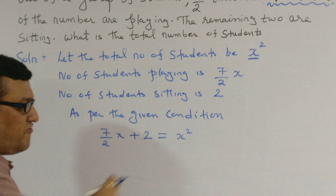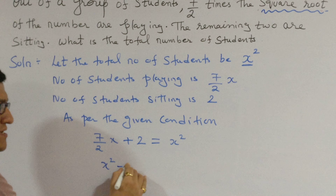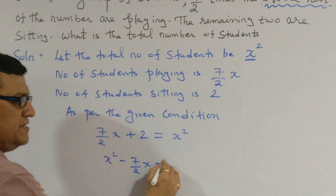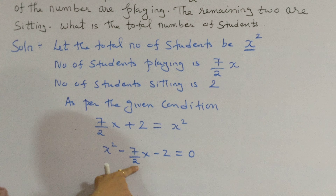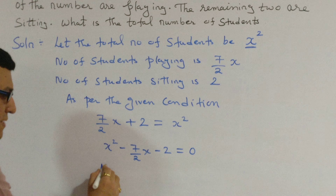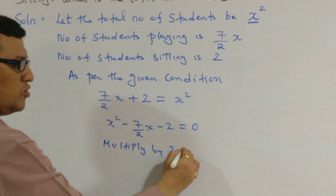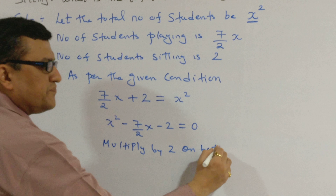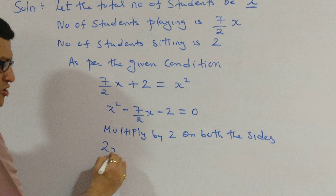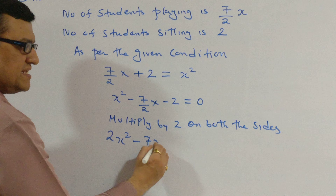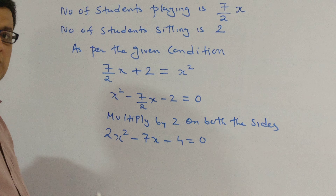Bring all terms to one side to get a quadratic equation in the form equal to zero: x² minus seven by two x minus two equals zero. Since we have denominator 2, we multiply by 2 on both sides, giving us 2x² minus 7x minus 4 equals zero.